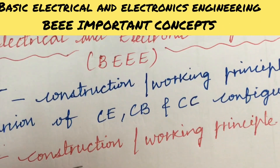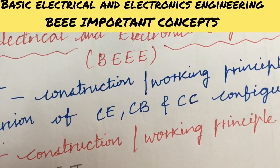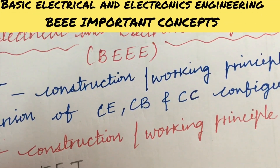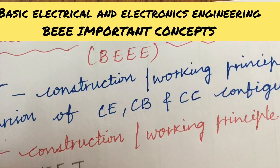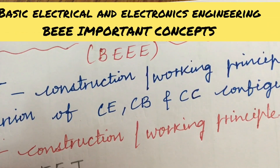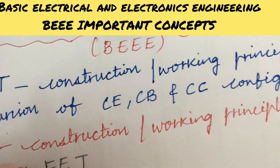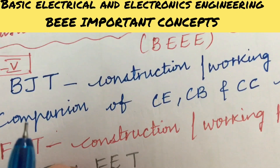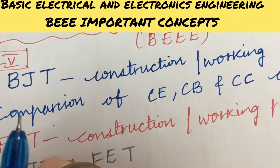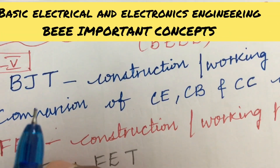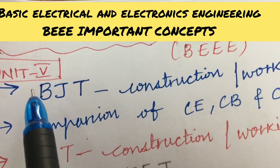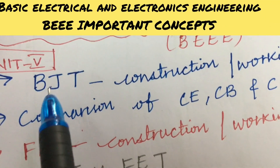Dear students, I have taken into consideration a few important questions and concepts where students feel the subject is too difficult. I hope you will be preparing with these concepts — do not skip this video and share with your friends. As per the COVID exam pattern, out of 8 questions you are supposed to attempt any 5. The first gunshot question is the 8th question, covered from Unit 5.